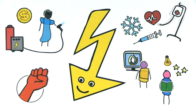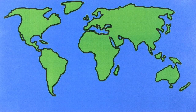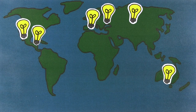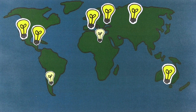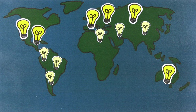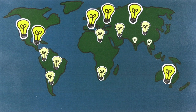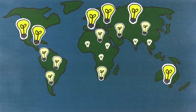Therefore, globally, the right to access electricity is getting more recognised. Nevertheless, worldwide, more than 1 billion people lived without electricity in 2016. That is about 14% of the world's population. The most affected are the rural areas of developing countries. In total, 84% of those without access to electricity are rural dwellers.